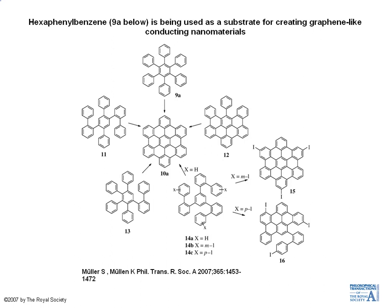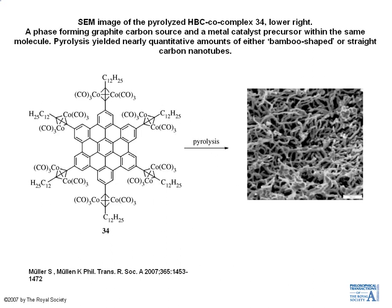Hexaphenyl benzene has recently been used as a precursor to graphene-like conducting nanomaterials — specifically conducting organic conductors such as compound 10a. A derivative of that compound has been reacted with a cobalt complex, and when heated at high temperatures it forms carbon nanotubes, either bamboo-shaped or straight, depending on the conditions. These are all graphite-like structures: graphite is flat sheets of fused benzene rings as an infinite sheet, and this synthetic route uses hexaphenyl benzene as a precursor to make those carbon nanotubes.